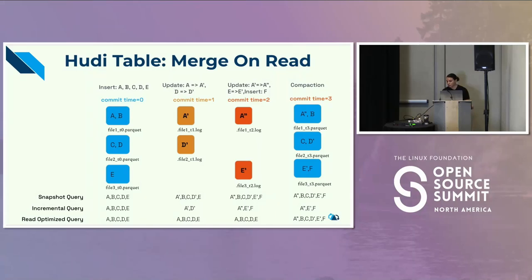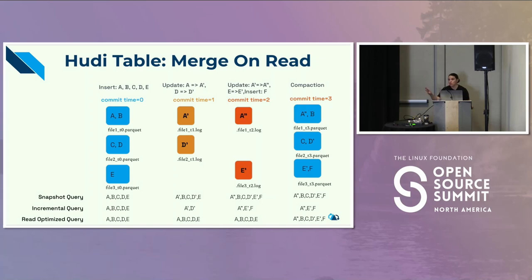This is the fundamental tradeoff: do you want efficient writes? You do merge on read — it's efficient writing the delta, but slower to read. If you don't need efficient writes but need fast reads, pick copy on write. To evaluate which table you want, look at your workloads. If you're doing a batch workload like once every hour, a copy on write table may be enough. But if you're working with streaming data, you need to be very efficient on writes to reduce write amplification, with a slight cost on read amplification. An incremental query just gives those updates from log or Parquet files. A read-optimized query shows the previous state of the table — not up to date.